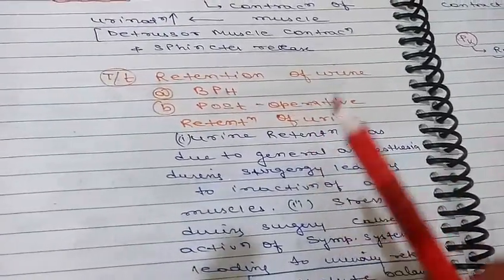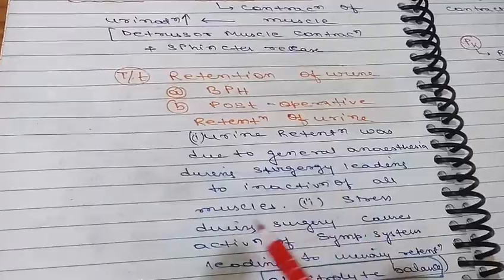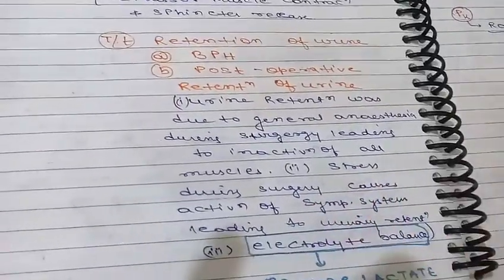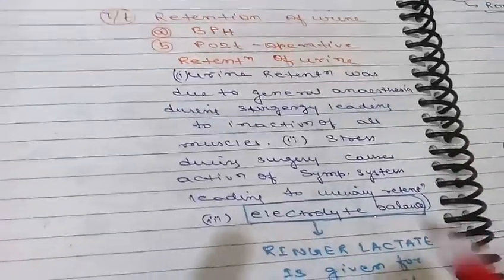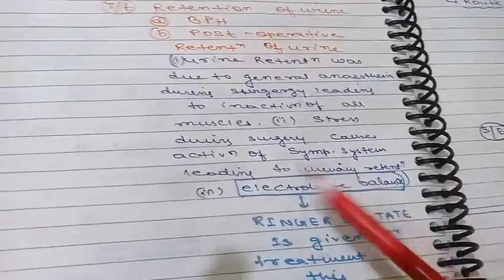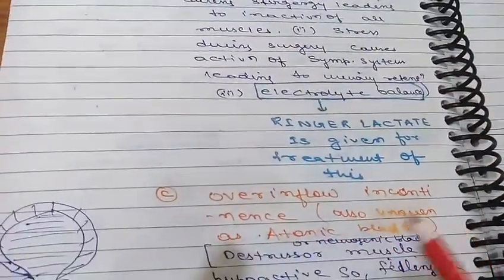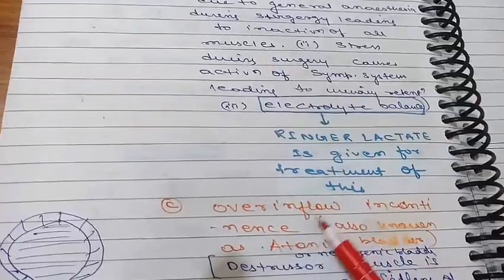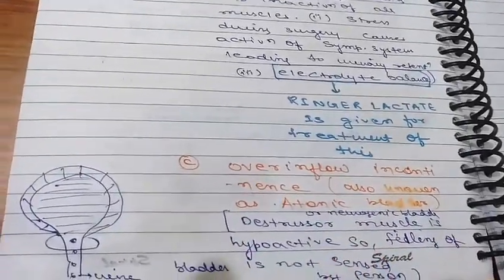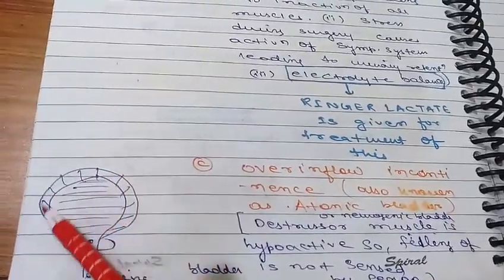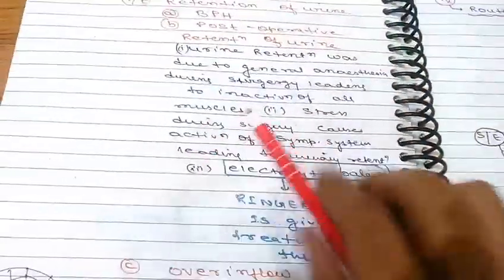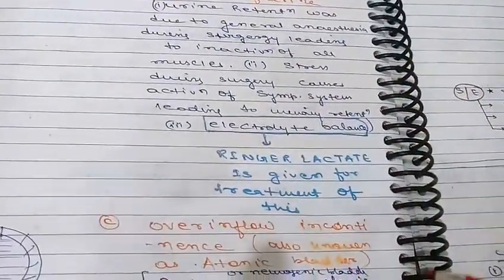Ringer lactate is given for electrolyte balance correction. The indications of bethanechol are: first, BPH; second, post-operative retention of urine; third, overflow incontinence, also known as atonic bladder — where the detrusor muscle has become hypoactive and cannot contract, so bethanechol is given to stimulate it.